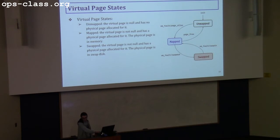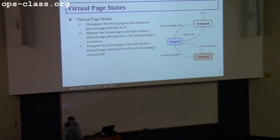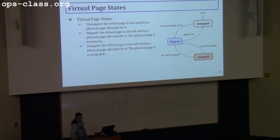With virtual page states, you have three states: unmapped, mapped, and swapped, depending on your implementation. Unmapped means that virtual page is not allocated virtually or physically. Mapped means the virtual page has been allocated physically and that page is in memory. Swapped means that virtual page has been allocated but the page is on the swap disk — it's not in memory. Things could change based on your implementation, but this is the general idea you should have about physical and virtual page states.